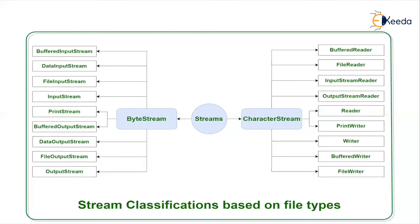FileInputStream is used to read data from the file. DataInputStream is used to read primitives from a file. We also have BufferedInputStream and ObjectInputStream. Similarly, for the output stream category, we have OutputStream, which is the abstract class. And the classes such as FileOutputStream, DataOutputStream, and ObjectOutputStream extend the OutputStream class.